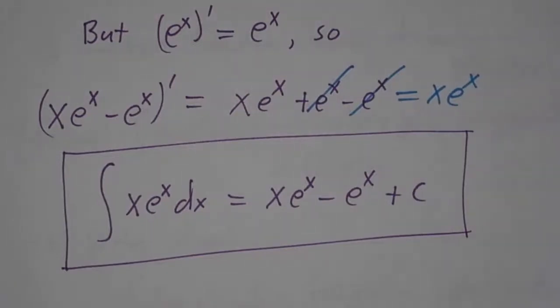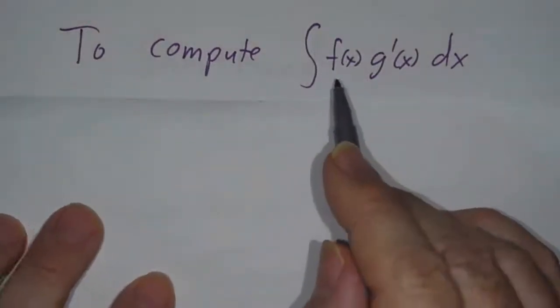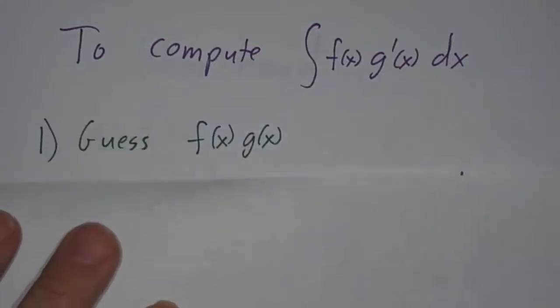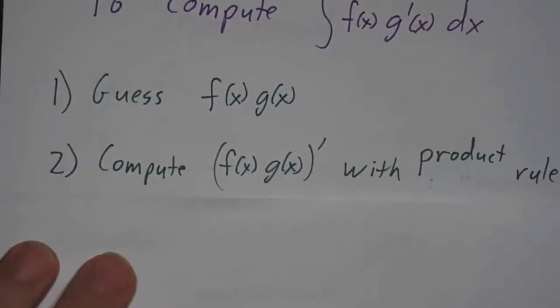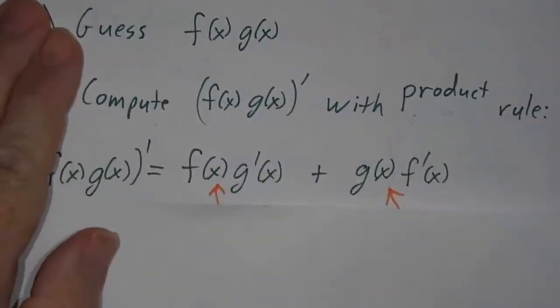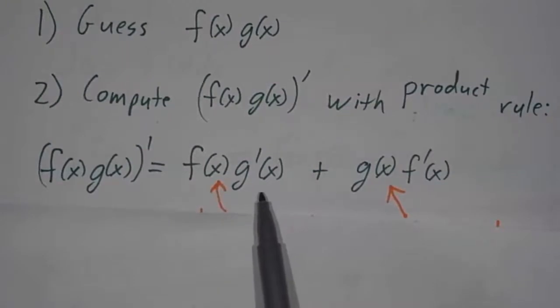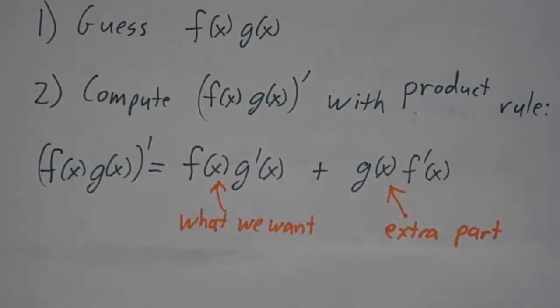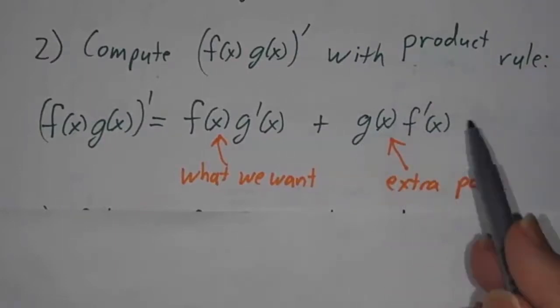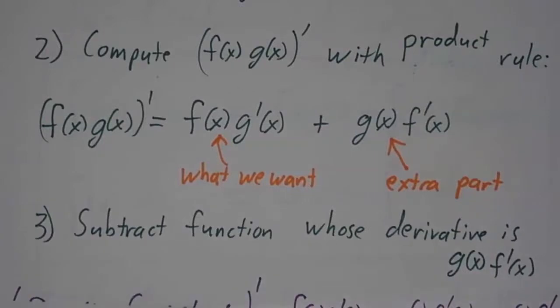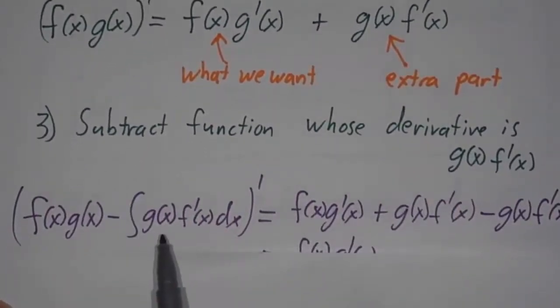You might be grumbling that guessing isn't a method because I didn't tell you how to guess in general — so I'll tell you. The technique is: whenever you want to integrate a function times the derivative of a second function, you can always guess the product f times g. Then you compute the derivative of f times g using the product rule. The derivative of f times g is f times g' plus g times f'. The first term is what you want and the second is extra. So you have to subtract off the integral of g times f' dx.